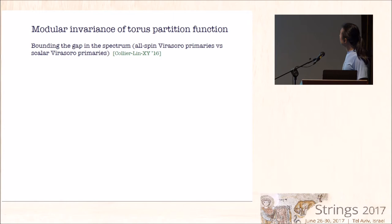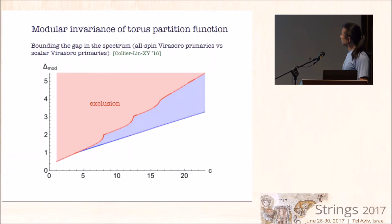We can use the modular invariance of the torus partition function to bound the gap in the spectrum of Virasoro primaries in a general unitary CFT. As a function of central charge, say greater than one, we can bound from modular invariance the gap of the first non-trivial Virasoro primary. The blue line here is the bound for all primaries of arbitrary spin and the red is the bound for just a scalar. There are interesting features here - some cusps - and we know that this bound has really been optimized at some points because there are theories that saturate these bounds such as WZW models at level one with symmetry group SU2, SU3, G2, SO8, and E8.